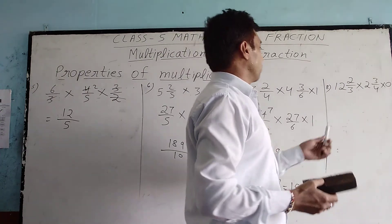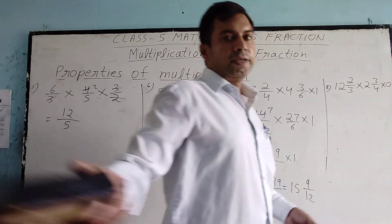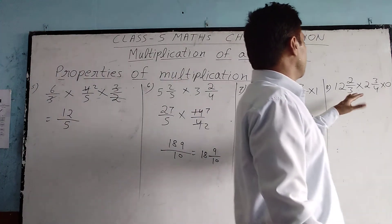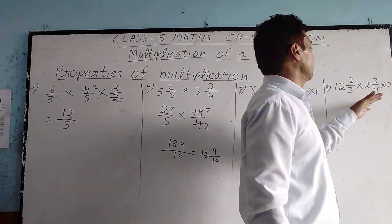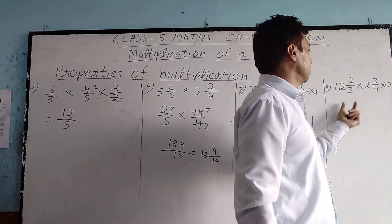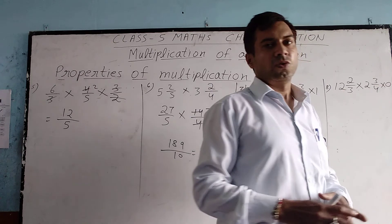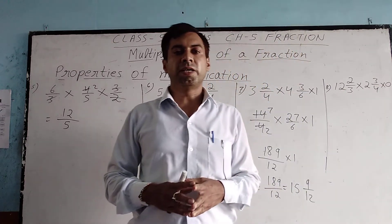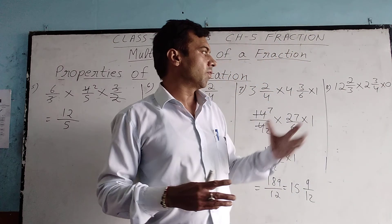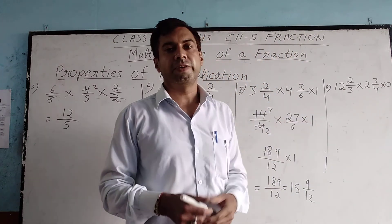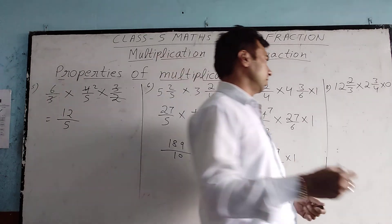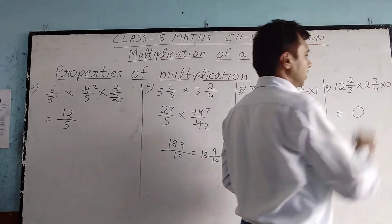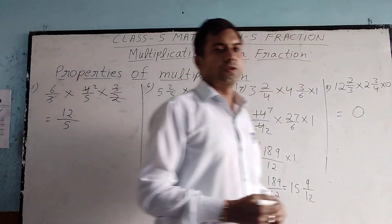Question number 8: here a fraction is multiplied by 0. Any fraction multiplied by 0 gives 0. We have to do nothing — we simply write 0 as the answer.